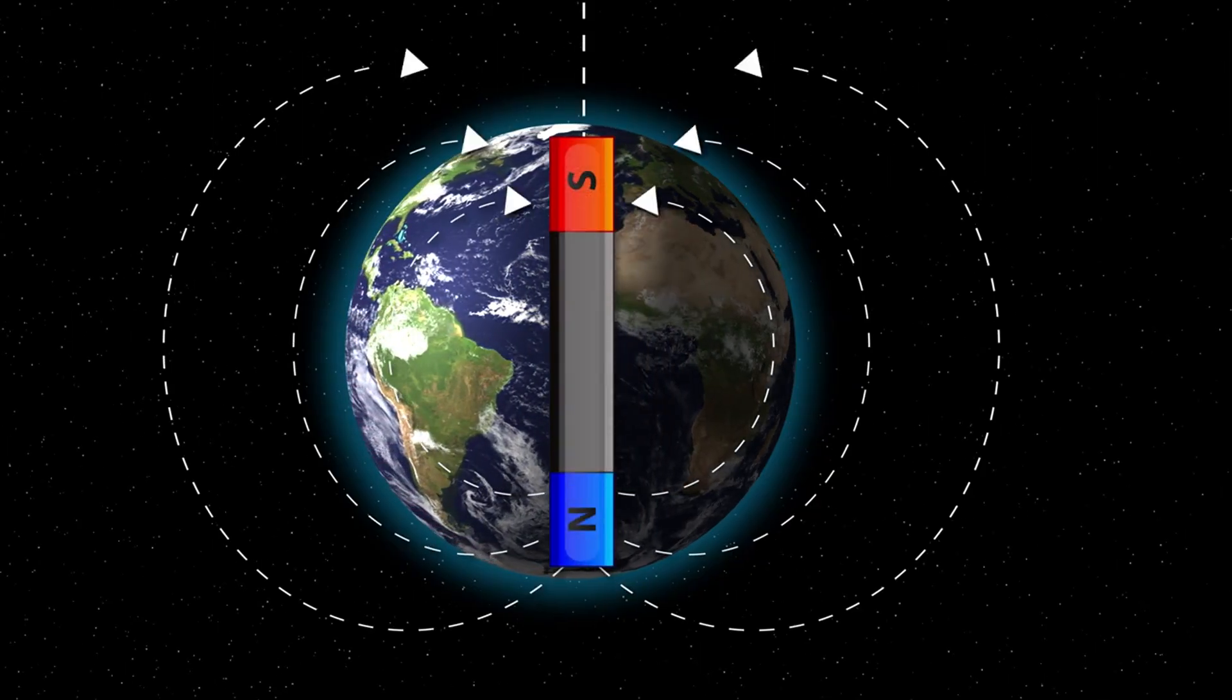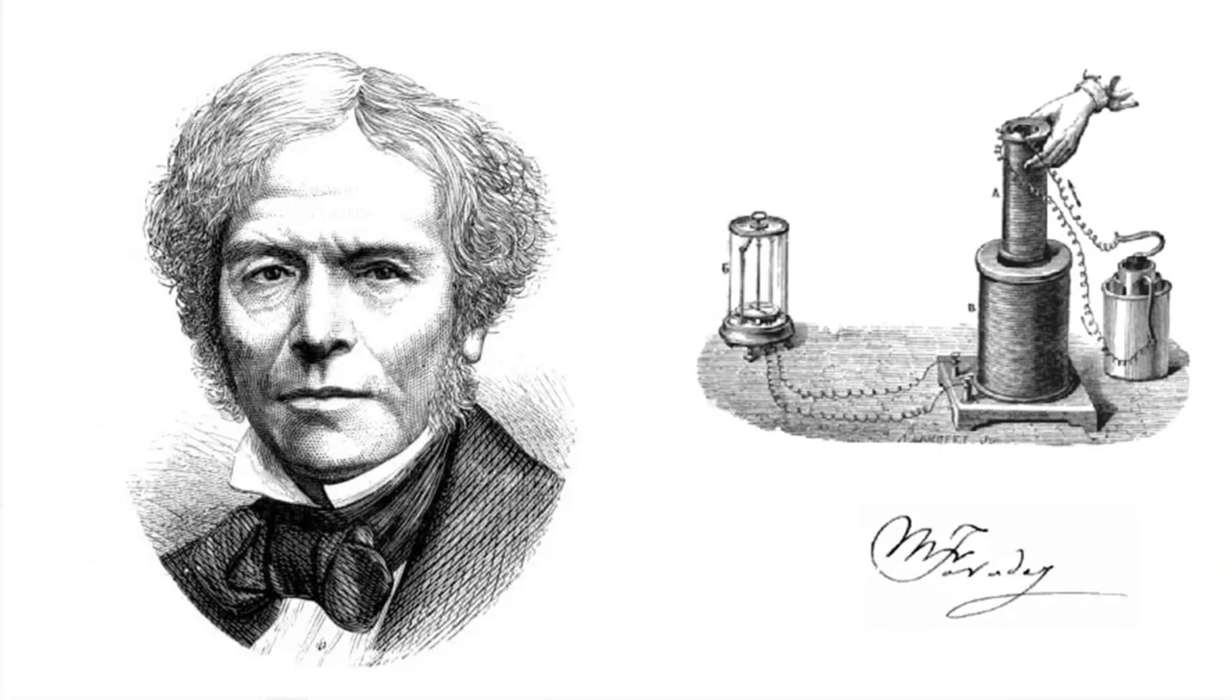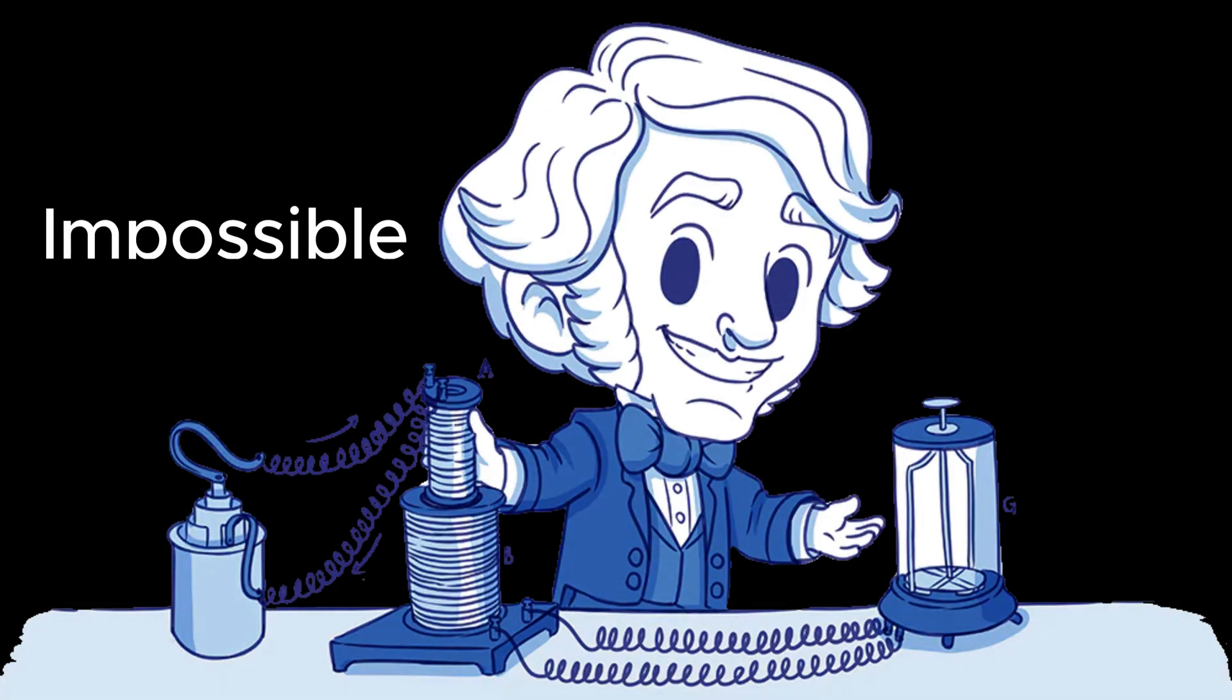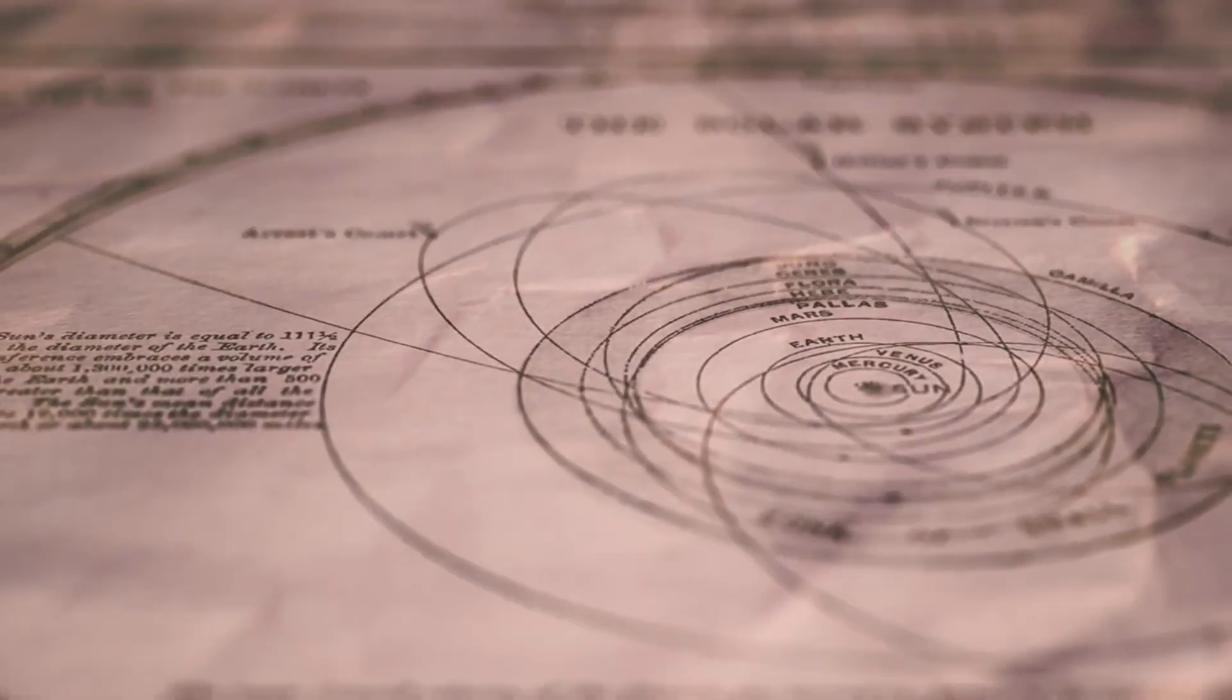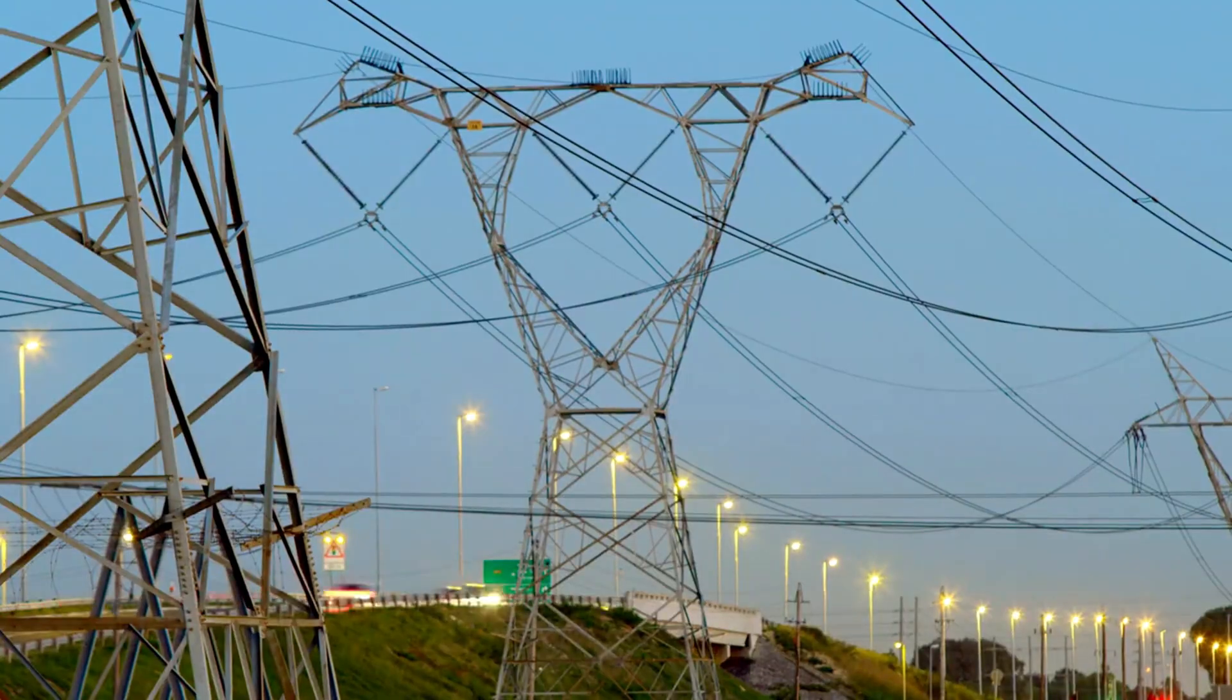For nearly two centuries, the physics community believed this couldn't be done. The legendary Michael Faraday even investigated it in the 1830s and declared it impossible. And for generations, textbooks have repeated the verdict: Earth's rotation through its own magnetic field can't be used to make power.